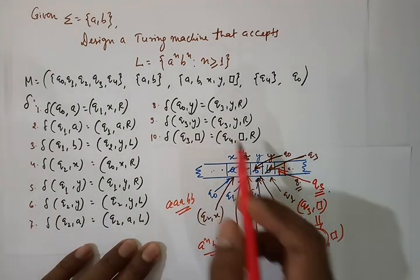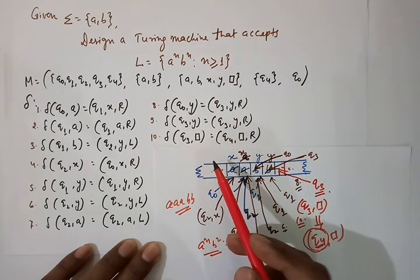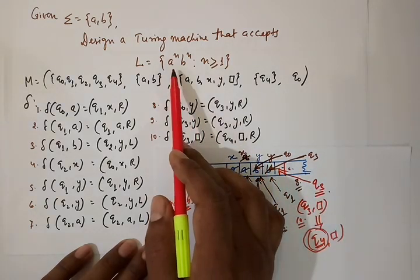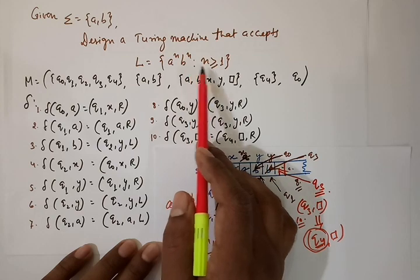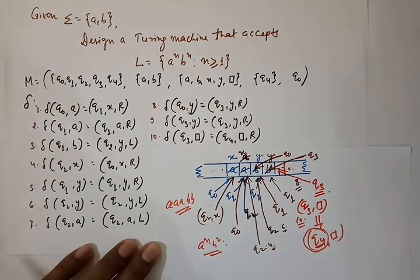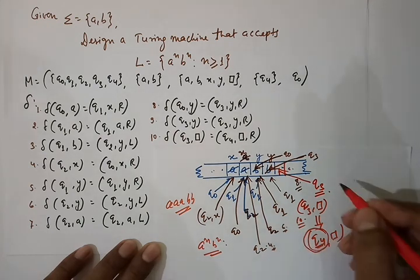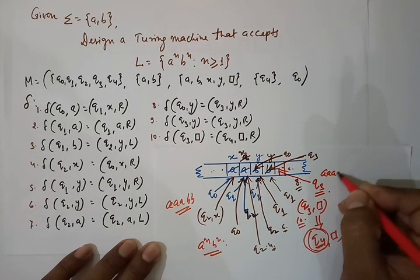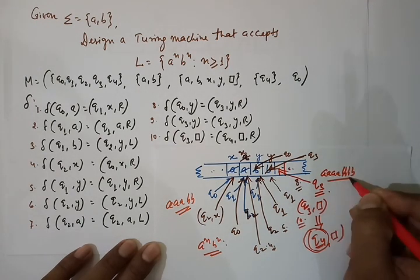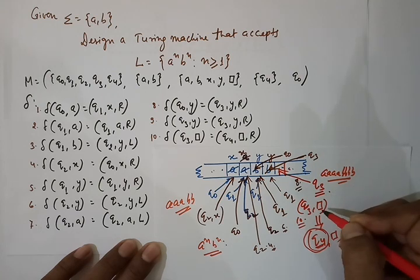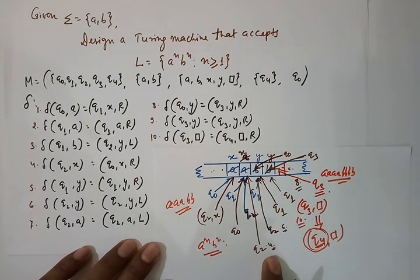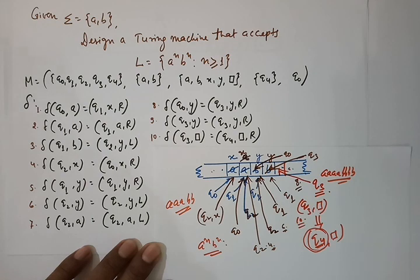This is all about our Turing machine which accepts the language a^n b^n, such that n ≥ 1. Go through this example carefully — the same logic can be applied for any number of a's and b's. I used a small example here due to space constraints. Thanks for watching this video.